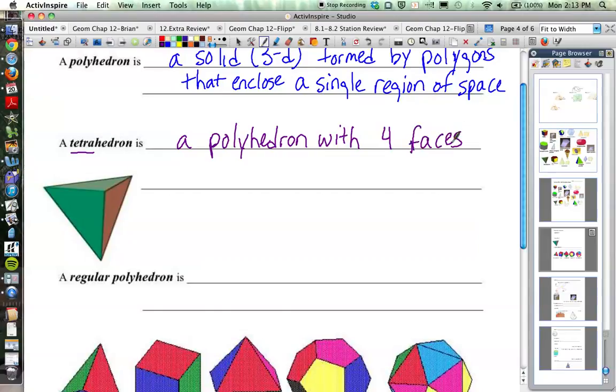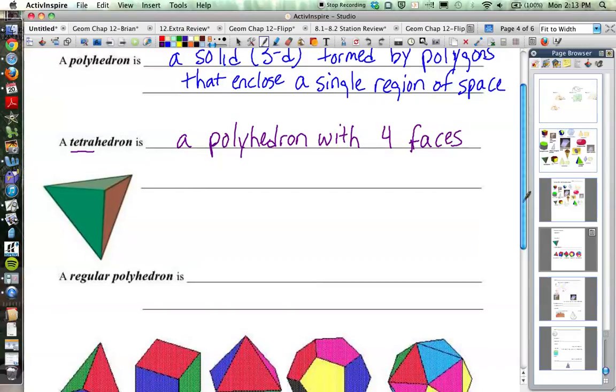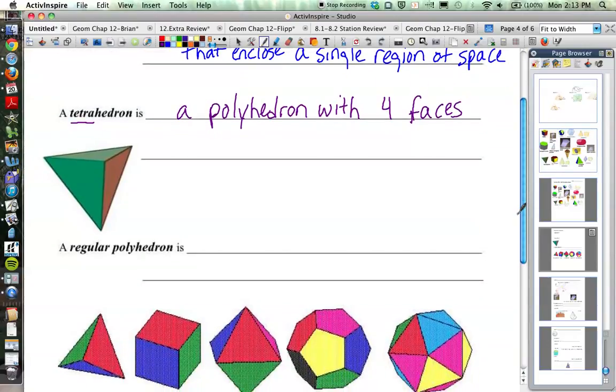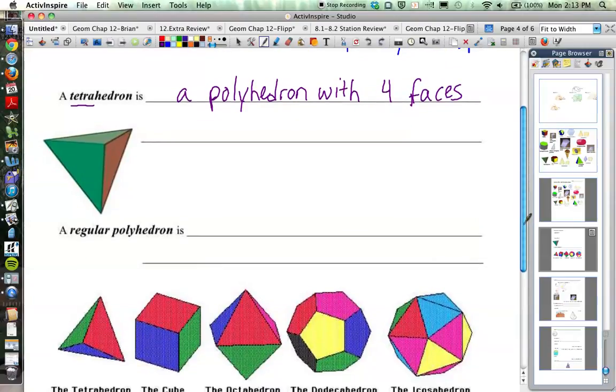So you have a picture of a tetrahedron here. And that shape might look familiar, but it does actually have four sides. And all of those sides are triangles. And that is called a tetrahedron.